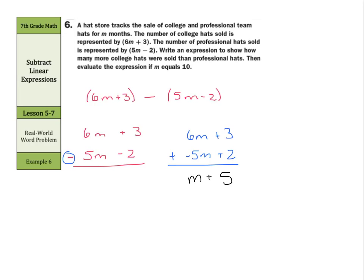Now, evaluate the expression for m equals 10. Well, put in 10 for m. 10 plus 5, and that's going to equal 15. So our answer: 15 more college team hats were sold. That is it for this lesson.